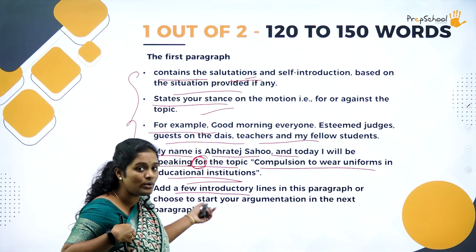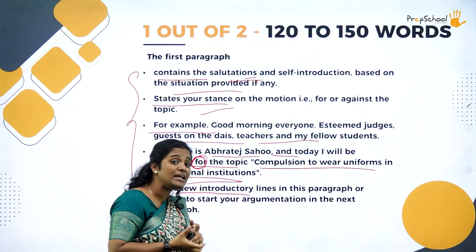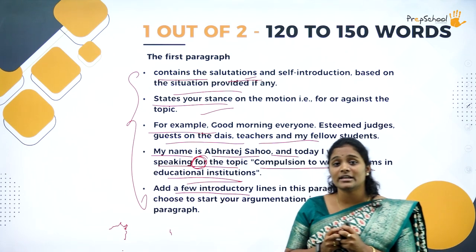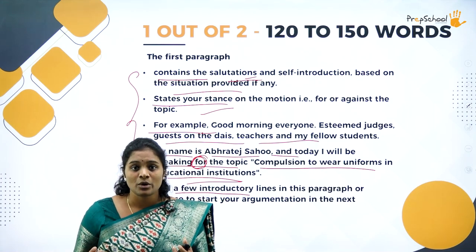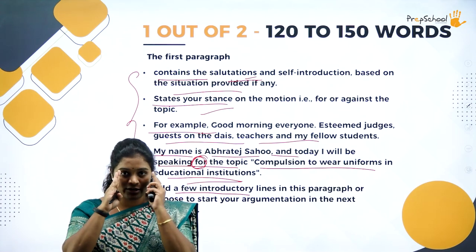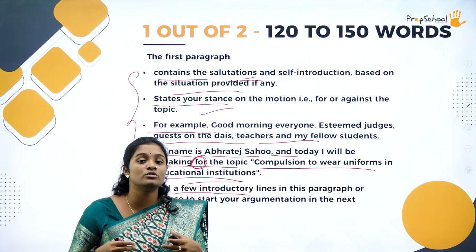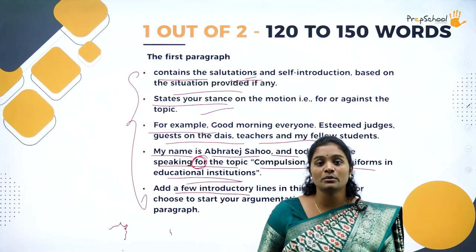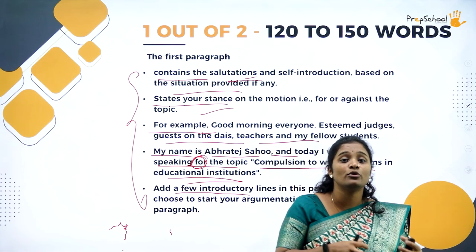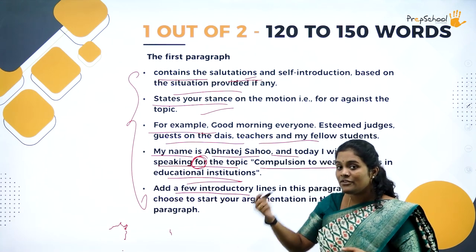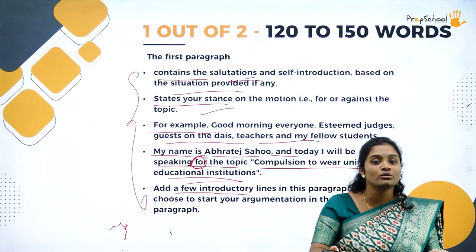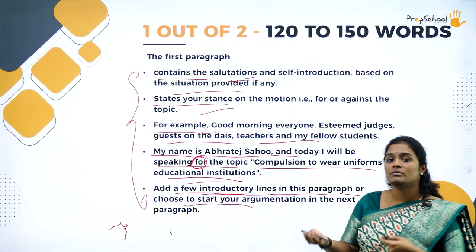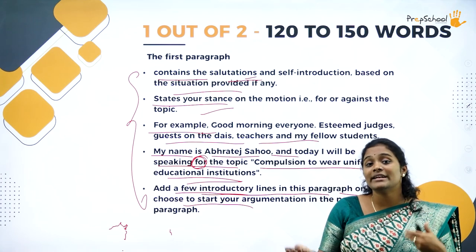In the first paragraph, you can talk about the idea behind uniforms in educational institutions. Why did uniforms come into the picture? Was it because they wanted students from varied backgrounds to have a similar mindset under one roof, with education as the main goal, and everybody treated equally? You can use quotations or create your own — for example: 'Uniformity in schools also brings about uniformity in the larger world you are about to step into.' Give a few introductory lines with background information. Argumentation comes in the next paragraph.